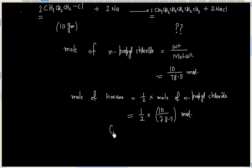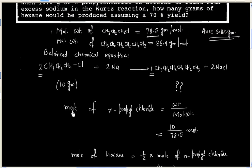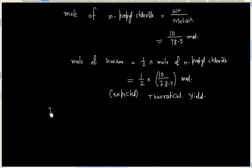And this is expected, that is theoretical yield. But the actual yield is only 70%. So, mole of hexane formed actually is 70% of this.